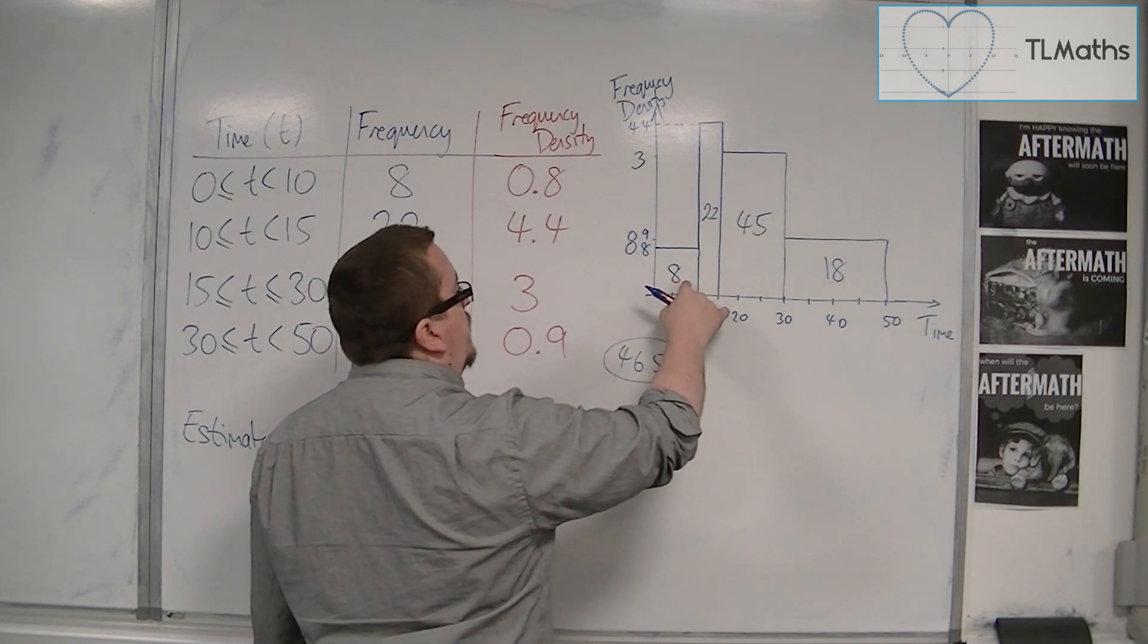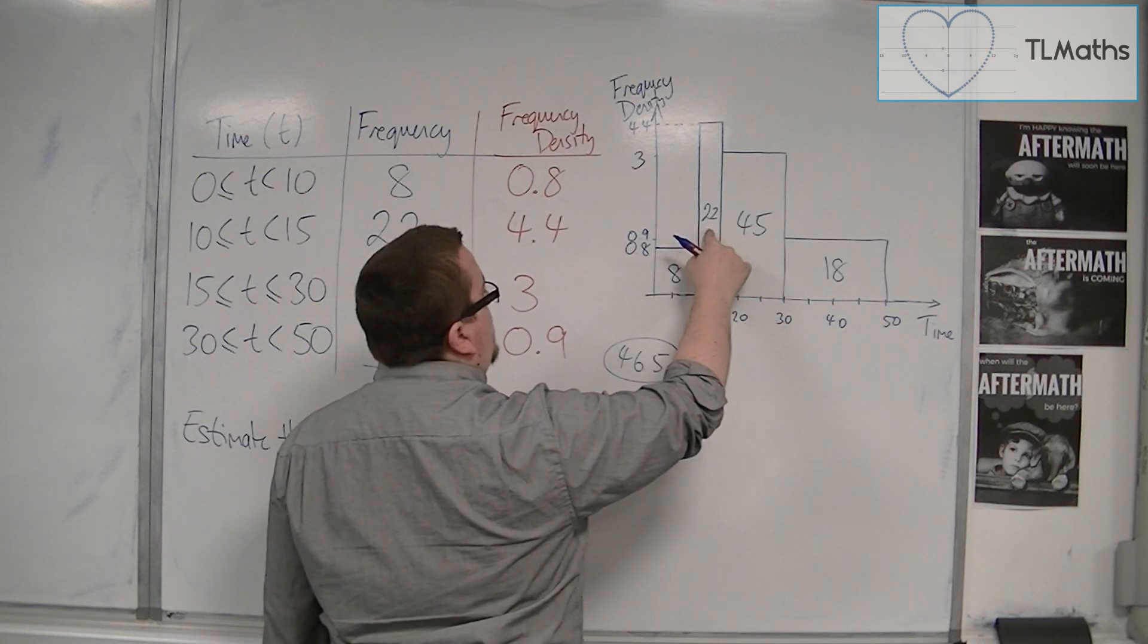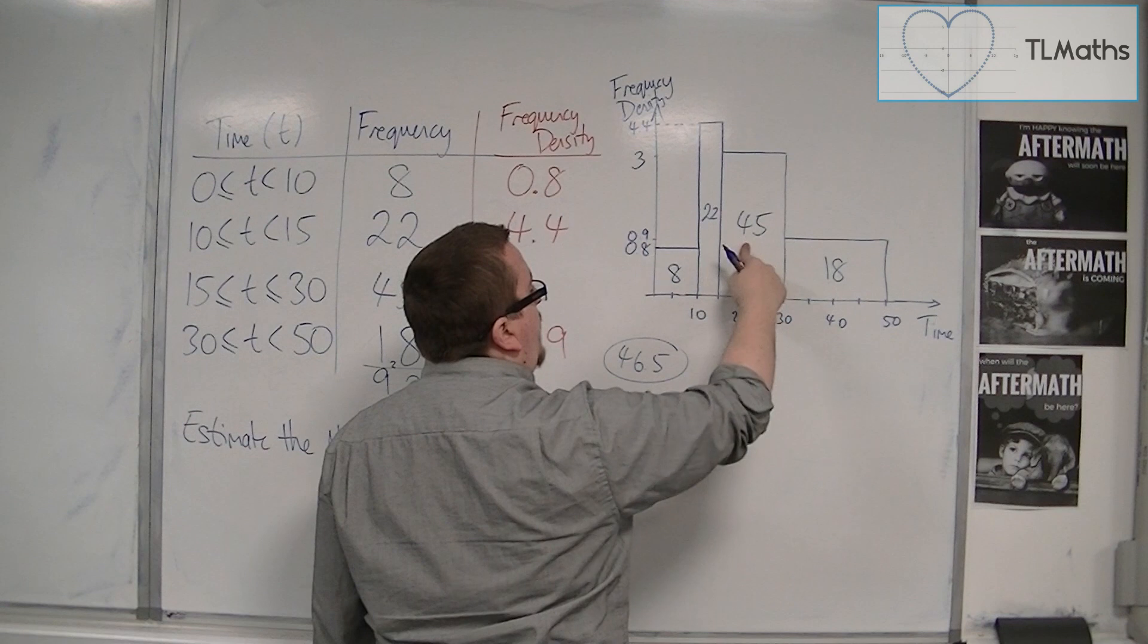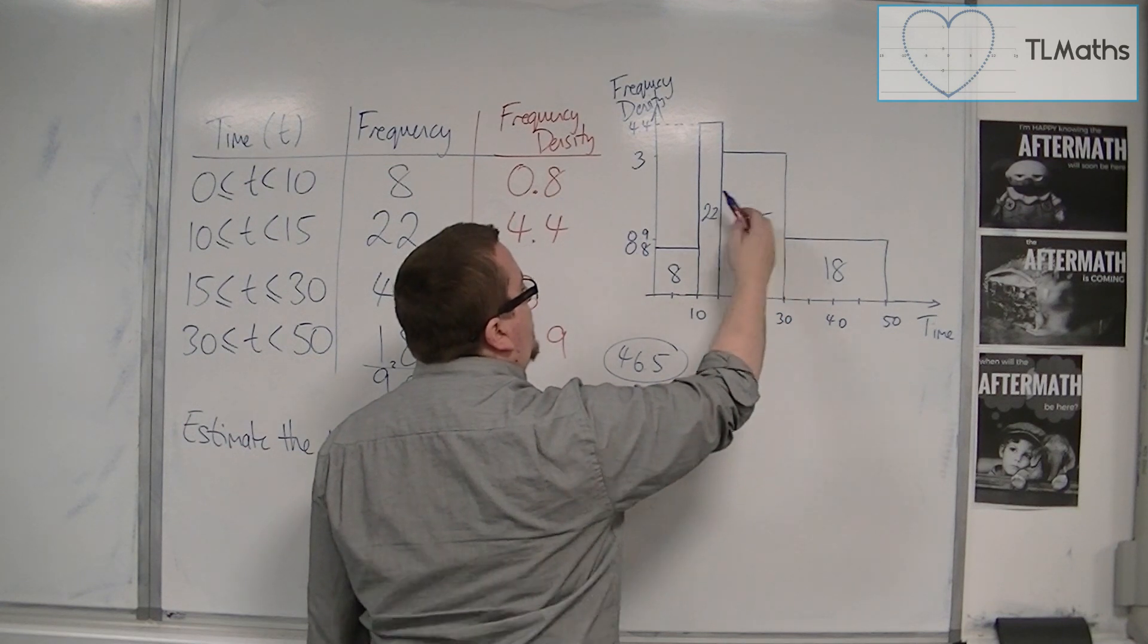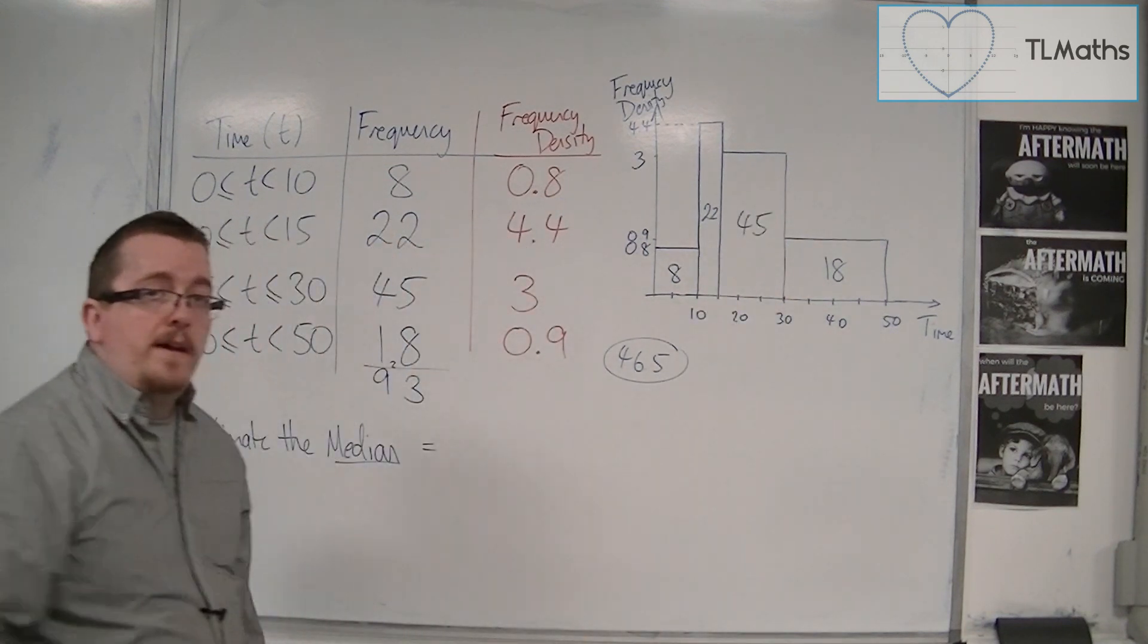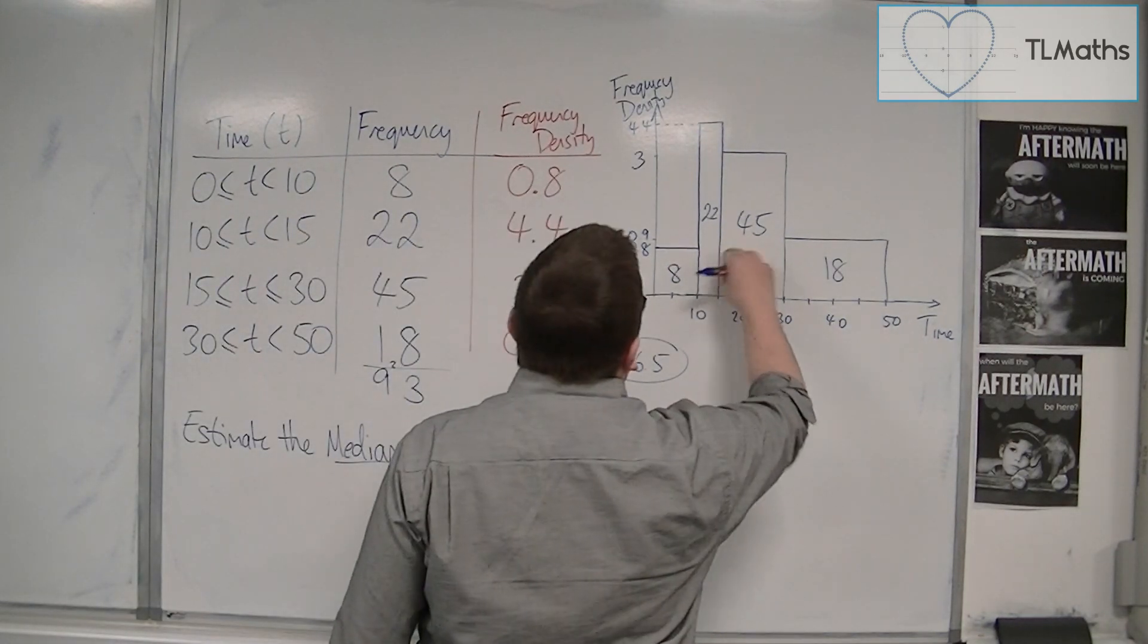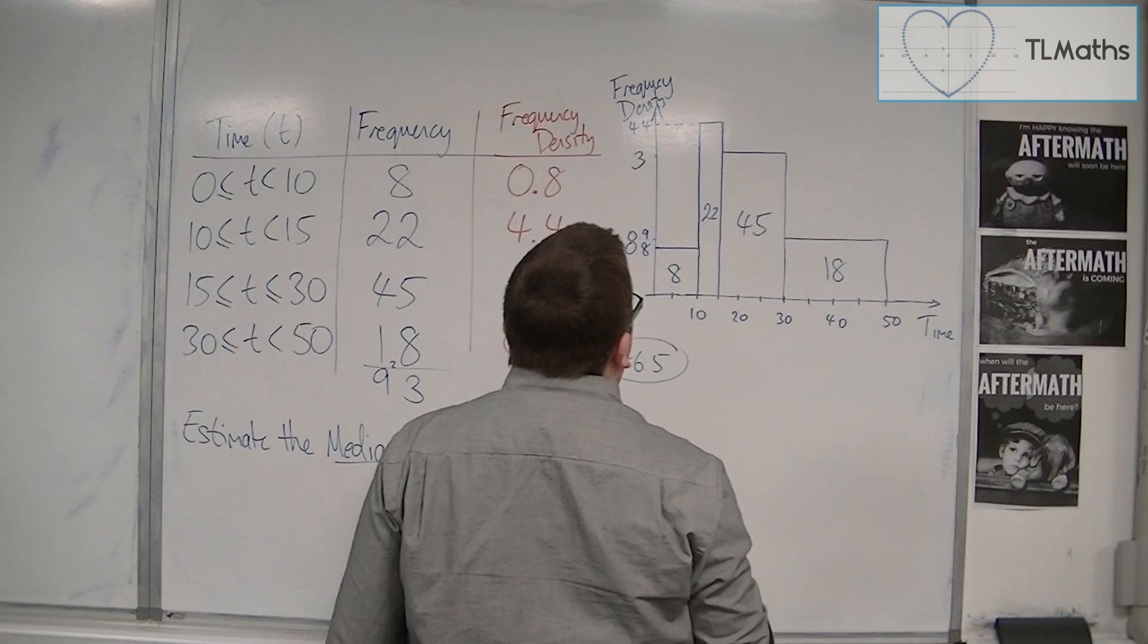If you're thinking about where the 46.5th point is. Well we've got 8. Then we've got 22. So that's 30. So we know that the 46.5th data point, effectively, is going to be within that bar there.